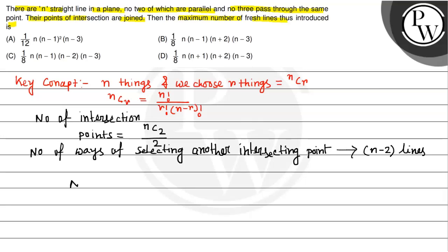That point lies on either of the line joining the two will not give the fresh line. So the number of fresh lines is: